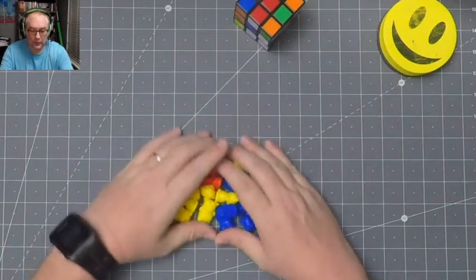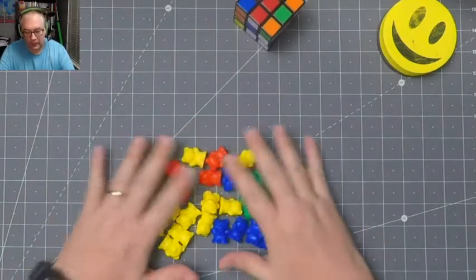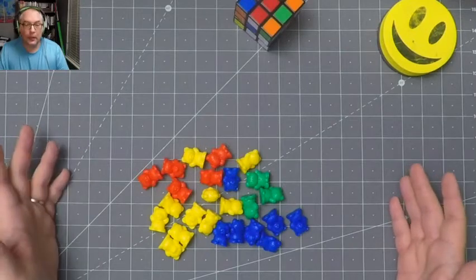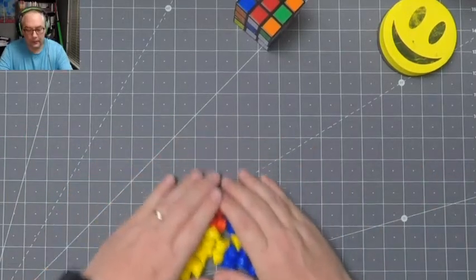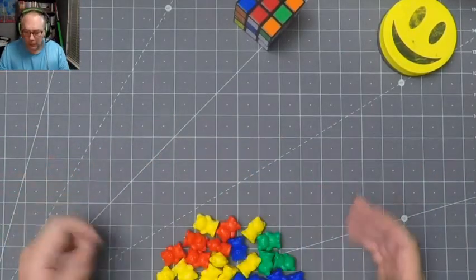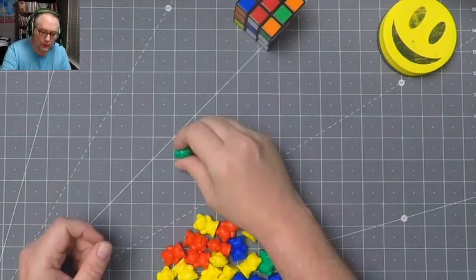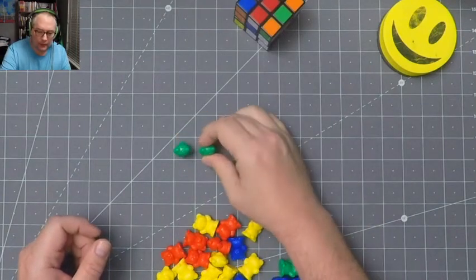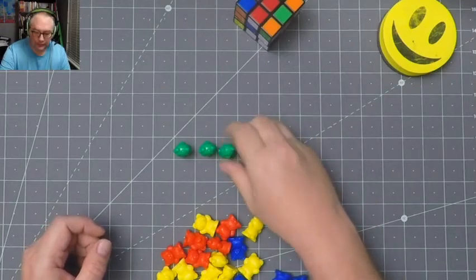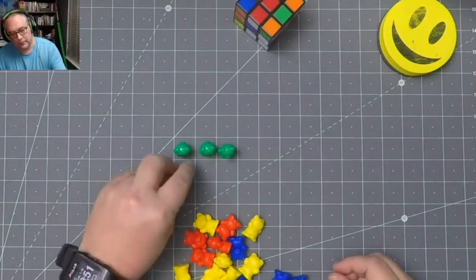So today we're going to take a look at these teddy bears or these counting bears and we're going to collect or create some data about these bears. So how can we do that? Well, first let's just take each bear and let's line them up by color. All right, so there we go.